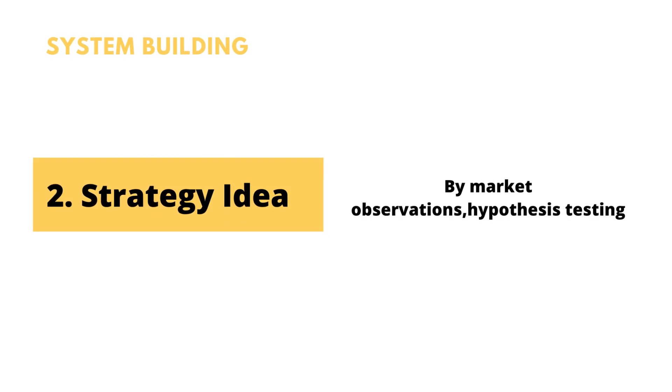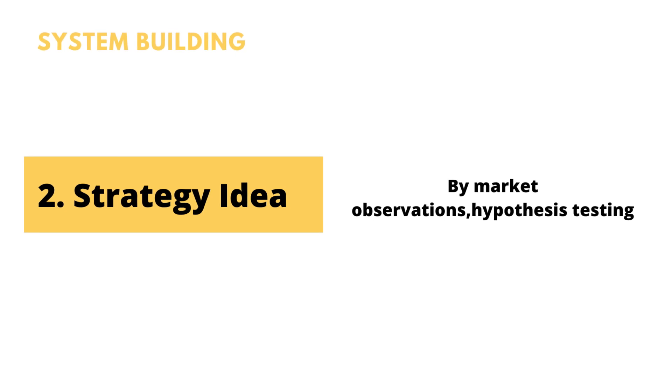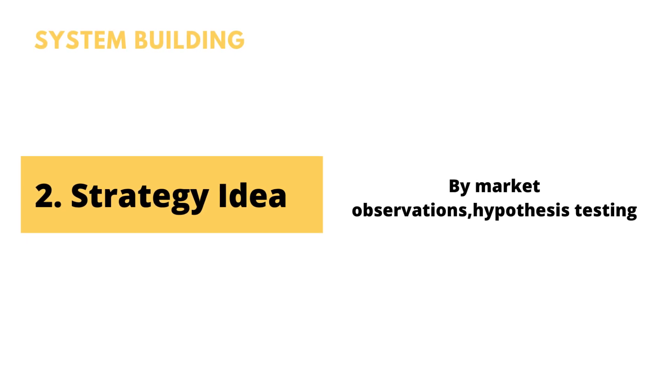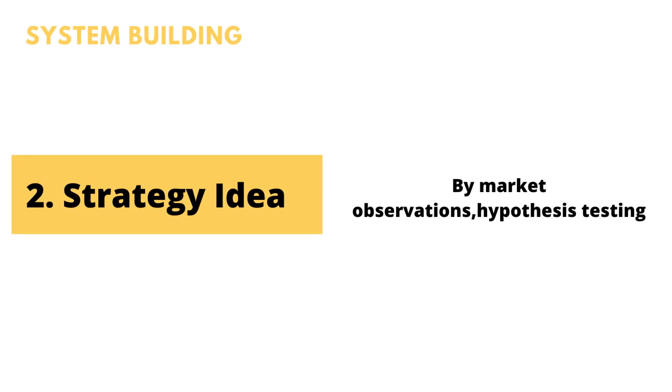The second step in system building is strategy idea. A strategy idea could be your market observations or your hypothesis about the market. For example, what if I buy a stock which closes above yesterday's high? What if I sell a stock that closes below yesterday's low? This is an idea and you need to actually test it out before putting in actual money.